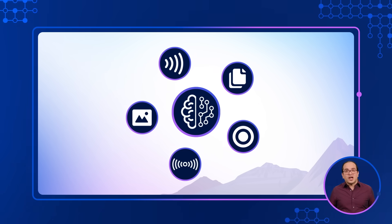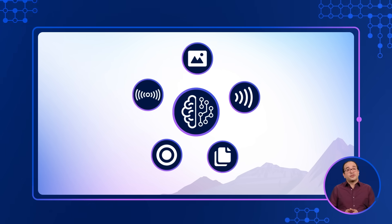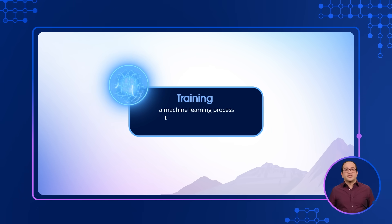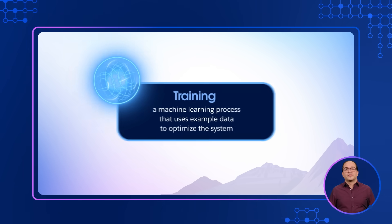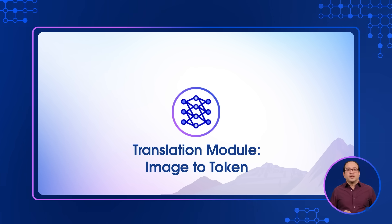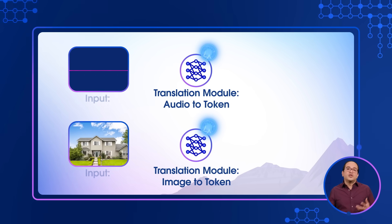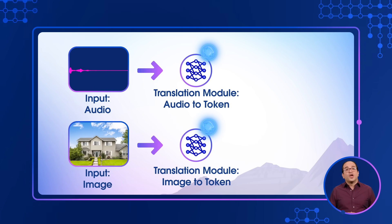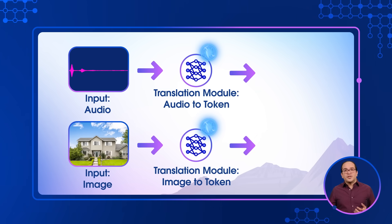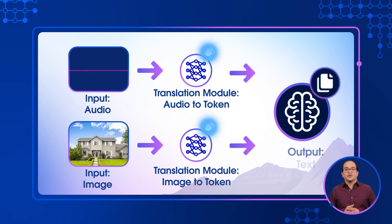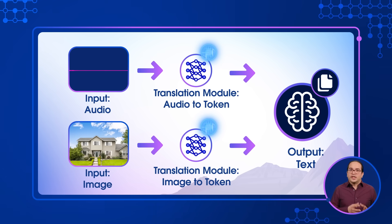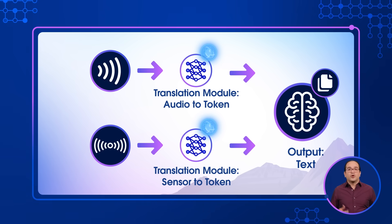To make this concept work, we have to take our AI system through training — a machine learning process that uses example data to optimize the system. Each translation module, like the Image2Token module, can be trained independently or alongside the others. This training ensures that the module can accurately map image content to a vector space that the LLM understands. Once trained, the LLM gains a new input pathway, allowing it to process images and generate responses based on their content. This process can be repeated to add more modalities, like sound or sensor data.